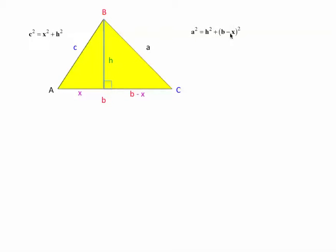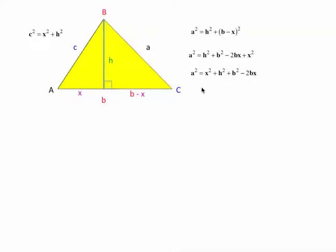This is the key step. I have a binomial, I'm going to square it, so that's going to give me B squared minus 2BX plus X squared. Then I notice that I have X squared plus H squared here, and here I have X squared and H squared — I'm just going to write them together as X squared plus H squared, and I'm going to replace that with C squared.